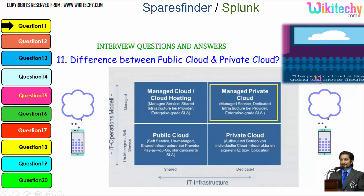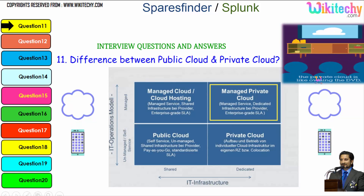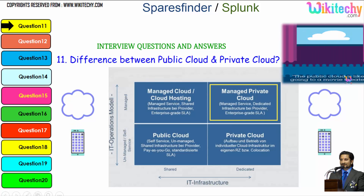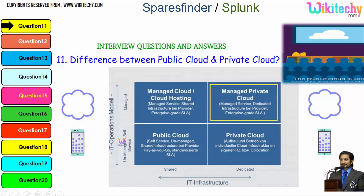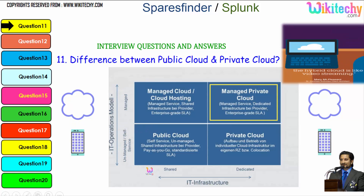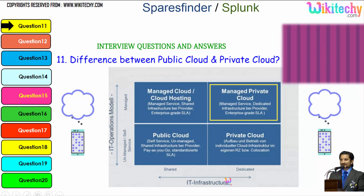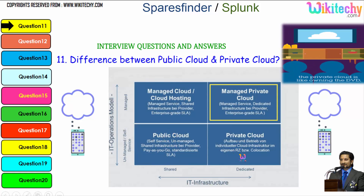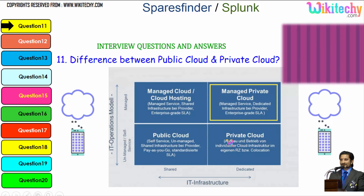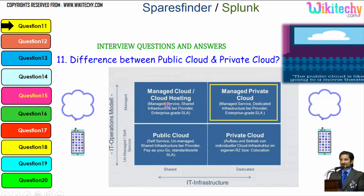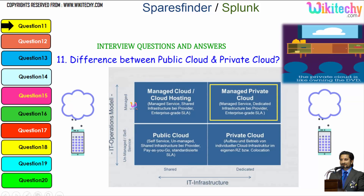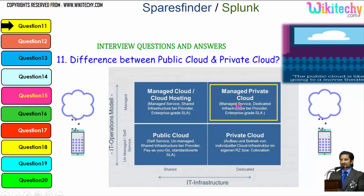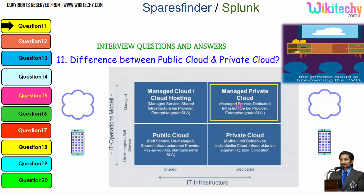Public cloud is like viewing a film in the theatre. Private cloud is viewing a film on DVD at home. And hybrid cloud is like video streaming. Looking at the IT operations model and IT infrastructure: a shared and unmanaged service is given by the public cloud; a dedicated unmanaged service is given by the private cloud; a managed cloud hosting is given by the shared managed cloud; and a managed dedicated service is given by the managed private cloud. This is how you can see the differences between the public cloud and the private cloud.